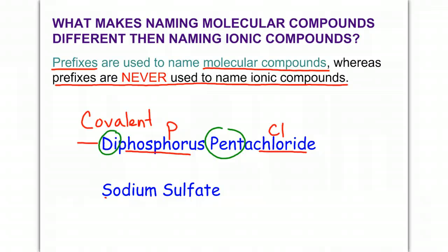Notice in our bottom example here, we have sodium, which on the periodic table is Na, and we have sulfate, which if you know your ions, is SO4. These have charges because this is ionic, and so I'm going to stop here because we learned how to do ionic compounds in the last section.